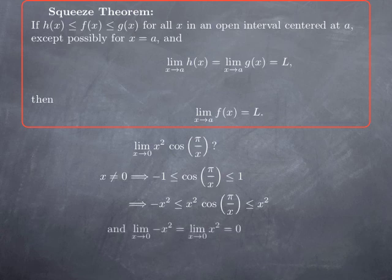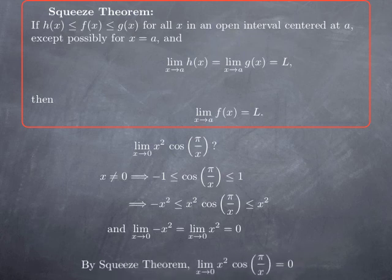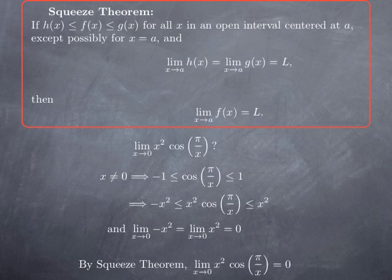Well, I can then observe that the two bounding functions, negative x squared and x squared, both have the same limit, which is zero, and therefore the squeeze theorem applies because x squared cosine of pi over x is between two functions for every x except x equals zero, and these two functions have the same limit, which is zero, so my function x squared cosine of pi over x has also limit zero.